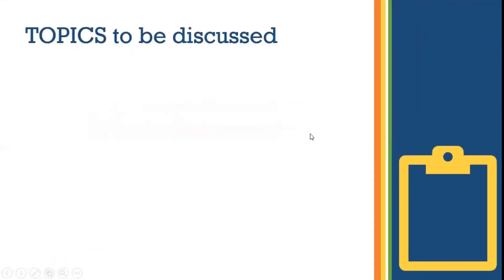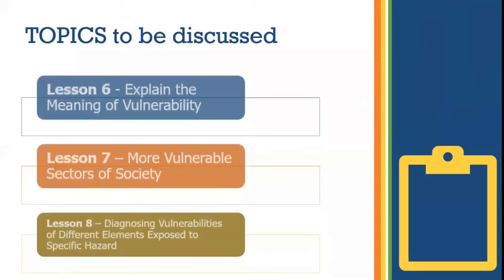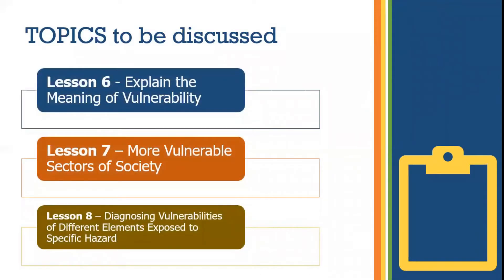For this module, we will be discussing three topics. Lesson 6: Explain the Meaning of Vulnerability. Lesson 7: More Vulnerable Sectors of Society. And Lesson 8: Diagnosing Vulnerabilities of Different Elements Exposed to Specific Hazard.